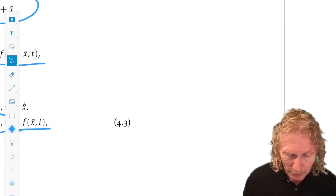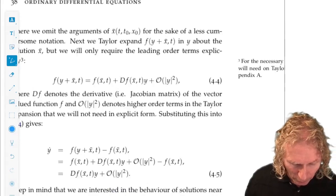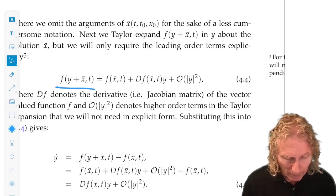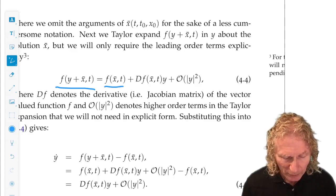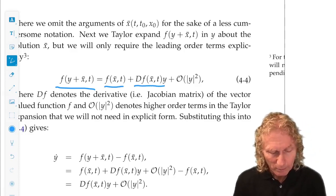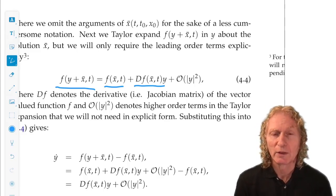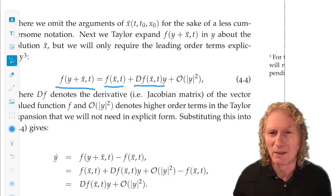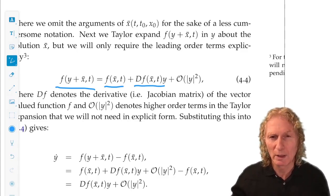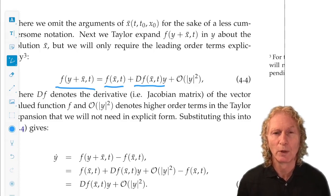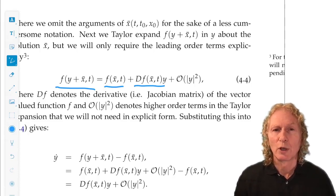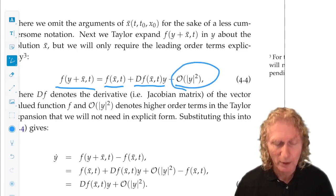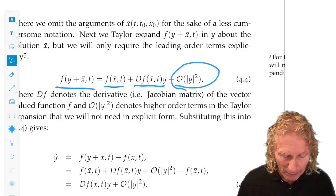But the general idea is just the same as that we're used to. F of Y plus X̄ T. It's the zeroth order expression plus the linear expression. Now, DF of X̄ comma T is an n-by-n matrix. It's the Jacobian matrix. It's the matrix of partial derivatives. T is just held constant. This is a very slick notation. Otherwise, there would be a lot of indices and matrices. And then, we have terms that are higher order in the terms that are linear in Y.